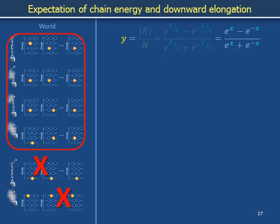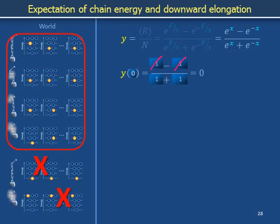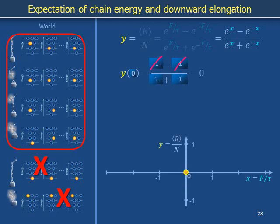We will analyze this function to provide a visual representation. What is the value of y evaluated at x equals zero? Substituting zero everywhere we find x: e to the zero is one. The two copies of one in the numerator cancel each other out, while the two copies in the denominator add to give two. Zero over two is zero, so y evaluated at x equals zero is itself zero. This coordinate pair corresponds to the origin of the xy plane. Because y at zero equals zero, the origin may be a so-called zero crossing of y on x.